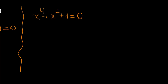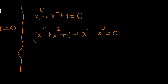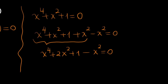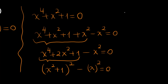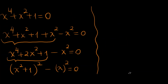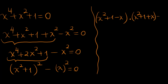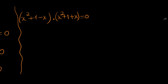We can add and subtract x squared to get a complete square. So: x to the 4 plus x squared plus 1 plus x squared minus x squared equals 0. The first four terms can be written as x to the 4 plus 2 times x squared plus 1, which is x squared plus 1 squared, minus x squared. We then use the difference of squares to write: x squared plus 1 minus x, times x squared plus 1 plus x, equals 0.